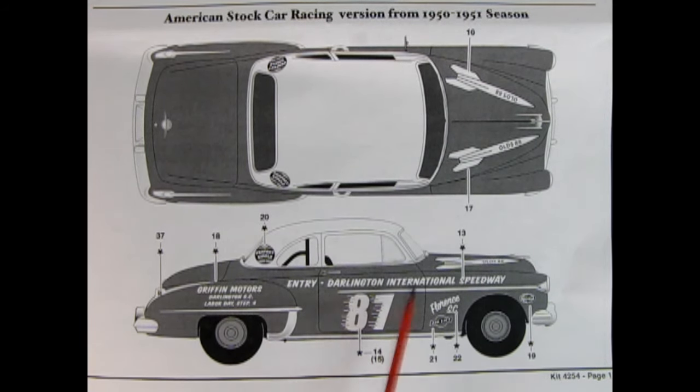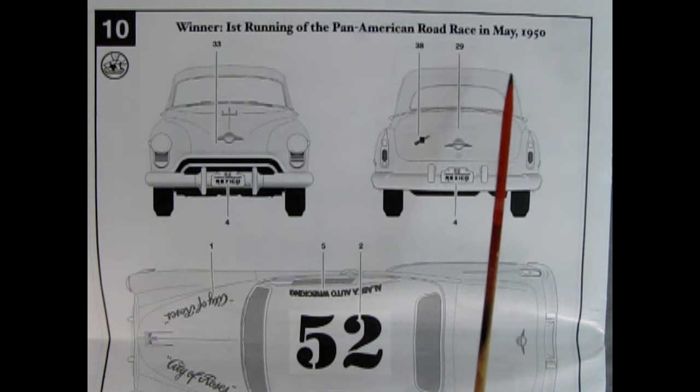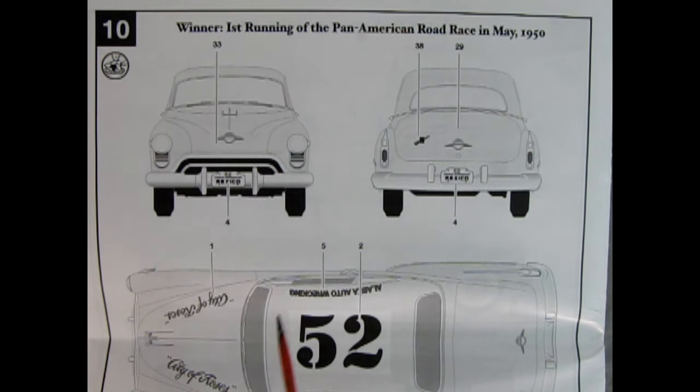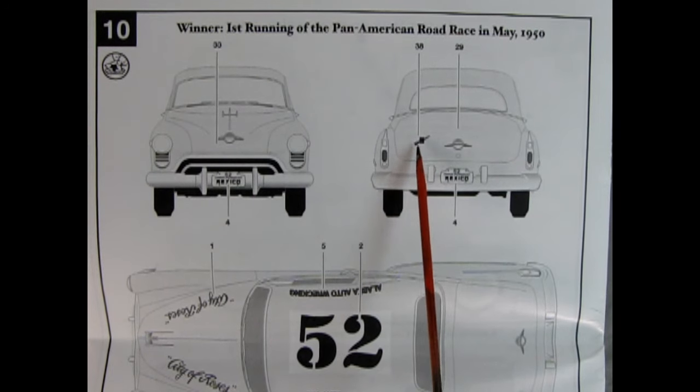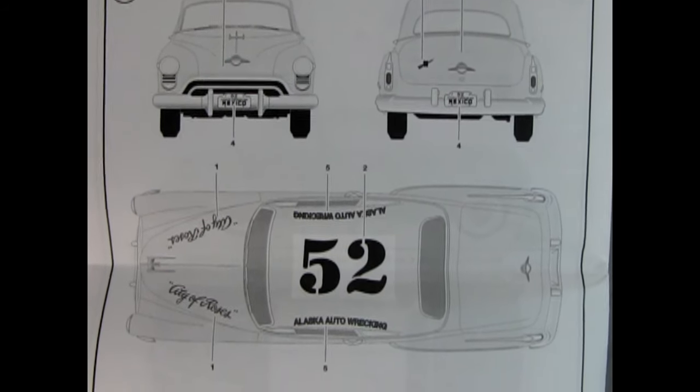That would be really cool to have this on a big NASCAR diorama. I'd like to see that. If you build something like that. Put it on our Facebook page please. Now last but not least. We get the winner of the first running of the Pan American Road Race in May 1950. So this was quite a cool race. If you ever look that up on the internet. It's well worth it. Here we've got a Mexican license plate here for 52. Or number 52 I guess. And then we've also got our stock Oldsmobile decal there. And something here for the globe emblem. And then if we just move this up a little bit. Get Trevor to do that. Let's move that right up there. So here we've got our top view. And it says Gift of Roses up here.